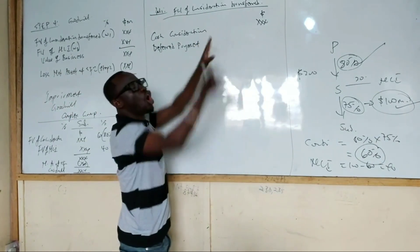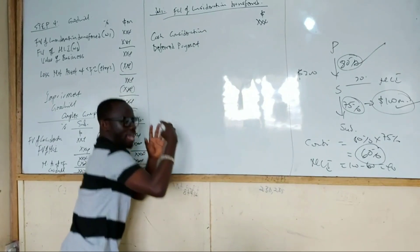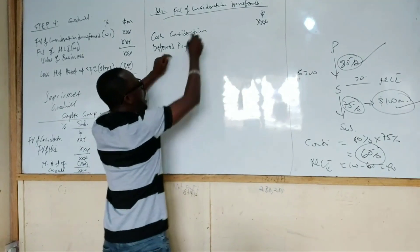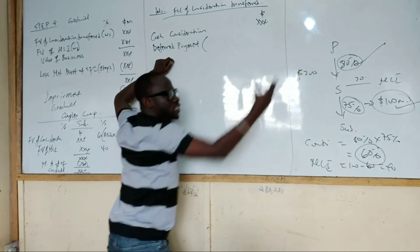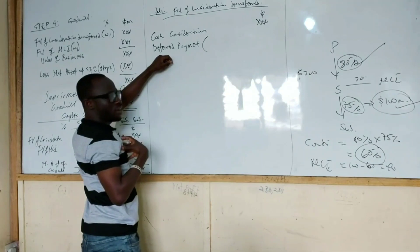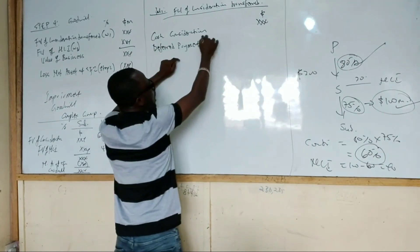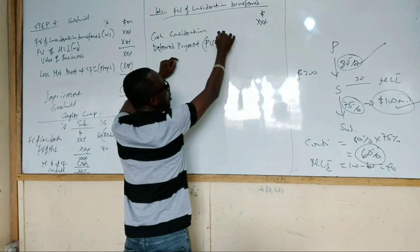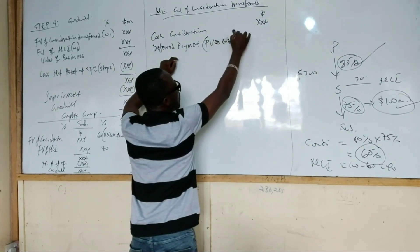And so they will be paying some of the money in the future. So if they will pay some of the money in the future, then we have to discount the future payment into present value. The deferred payment will find the present value of it using the borrowing rate or the cost of capital of the parent.